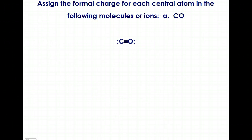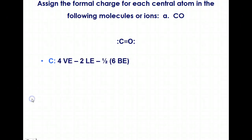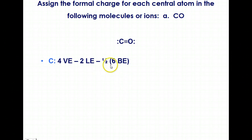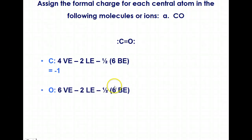Here we're going to look at formal charge for carbon monoxide. We don't have a central atom in this molecule, so we look at both carbon and oxygen. Carbon has four valence electrons; only two are assigned to carbon as lone electrons. It has three bonds between it and oxygen, so six electrons are being shared. The difference between the valence electrons and the lone and bonding electrons gives a formal charge of minus one.